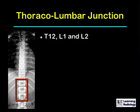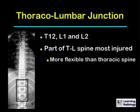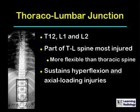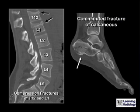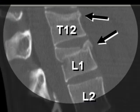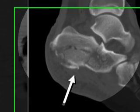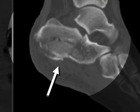The thoracolumbar junction is defined as T12, L1, and L2. Mechanically, it is more flexible than the fixed kyphosis of the thoracic spine, and it is the portion most injured in traumatic injuries. It sustains both hyperflexion and axial loading injuries, which usually occur with a jump from a height onto the feet. This example shows compression fractures of T12 and L1, with black arrows pointing to the depressed superior end plates — associated with a comminuted fracture of the calcaneus in an individual who jumped from a second-story burning building.